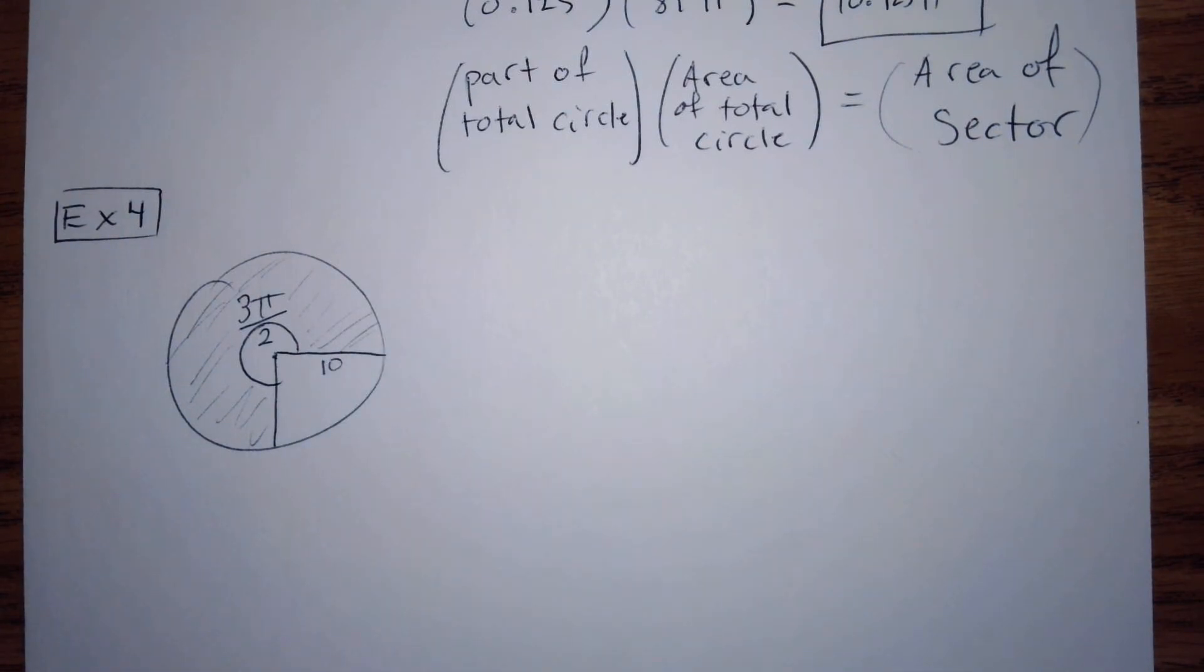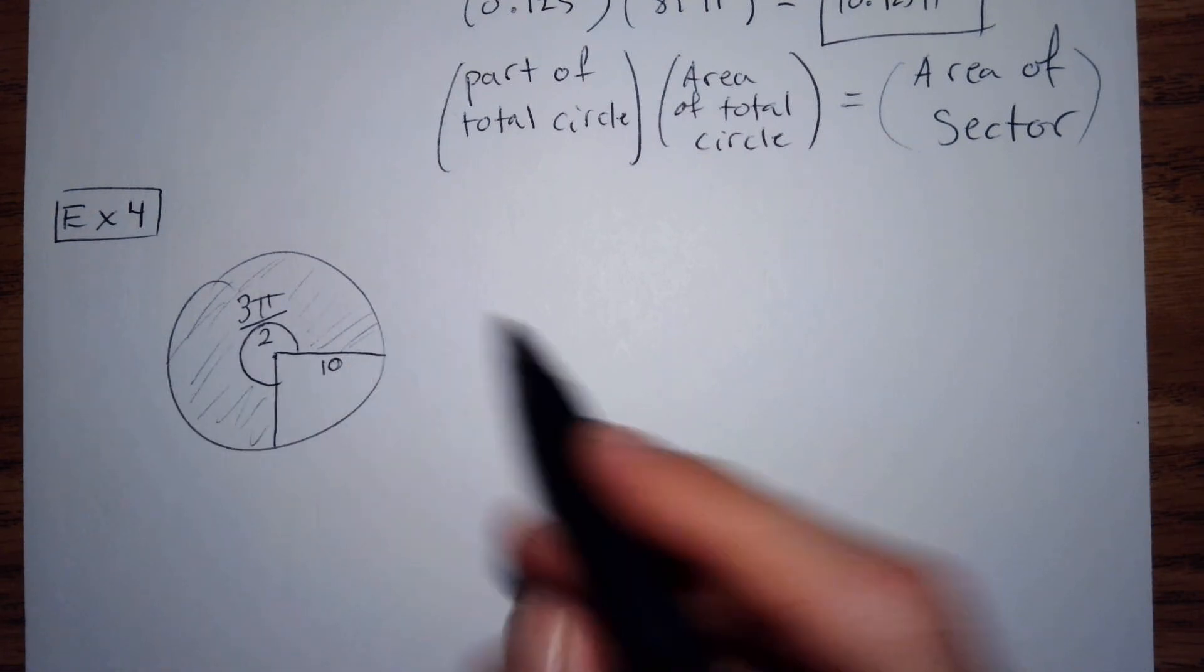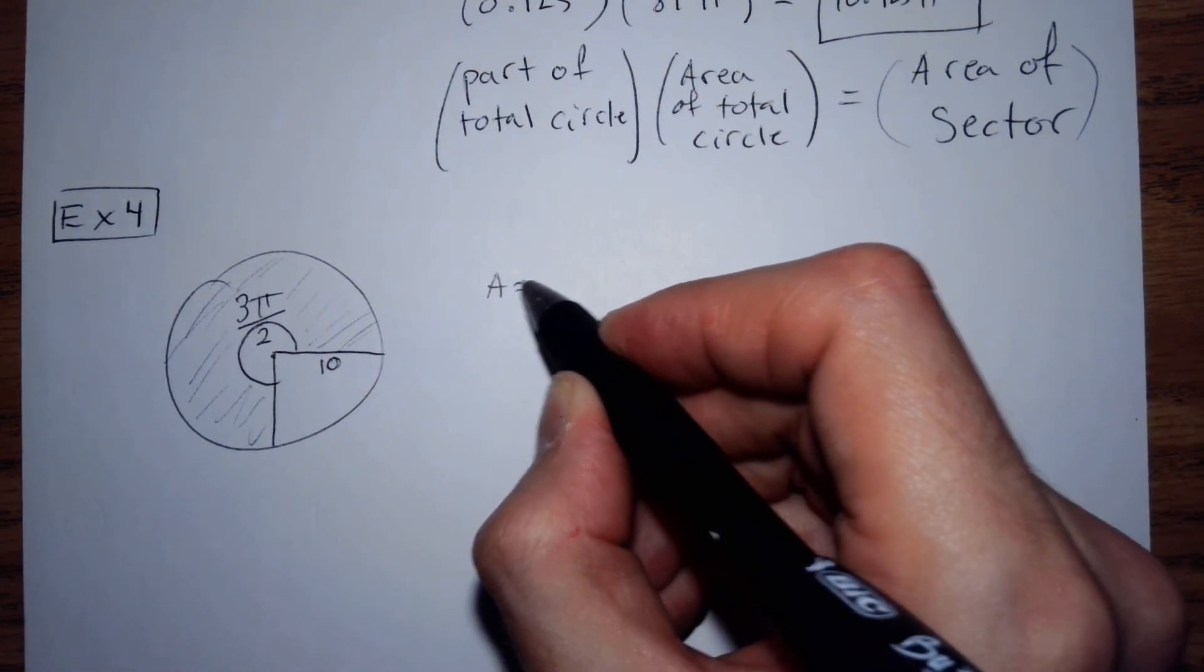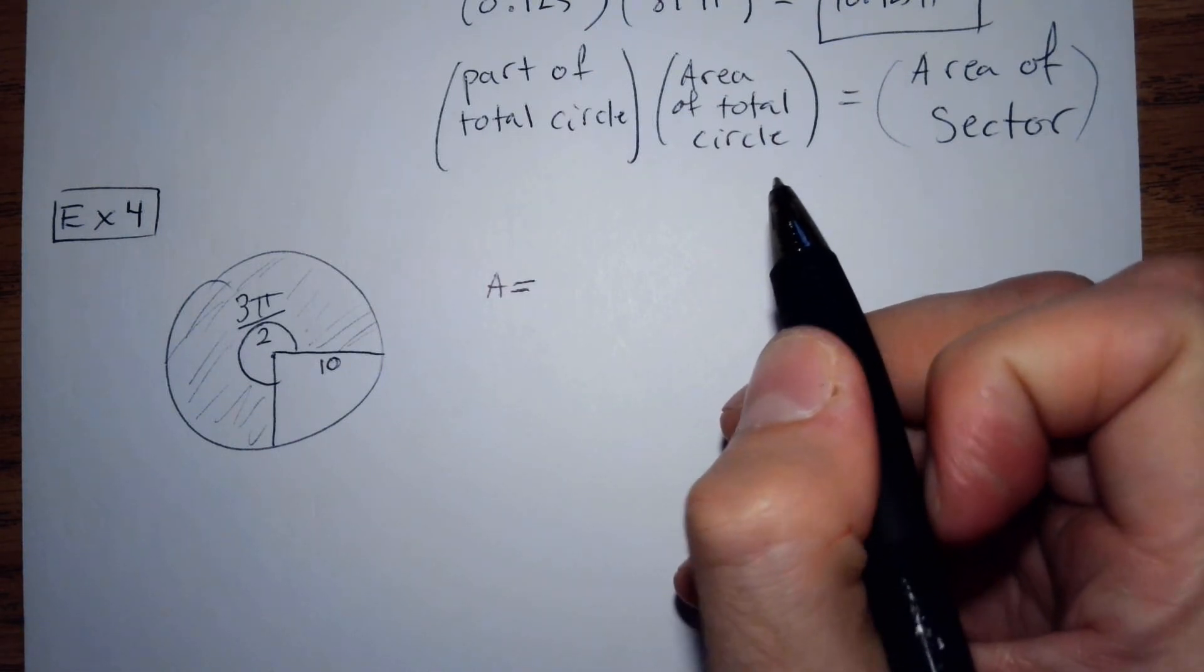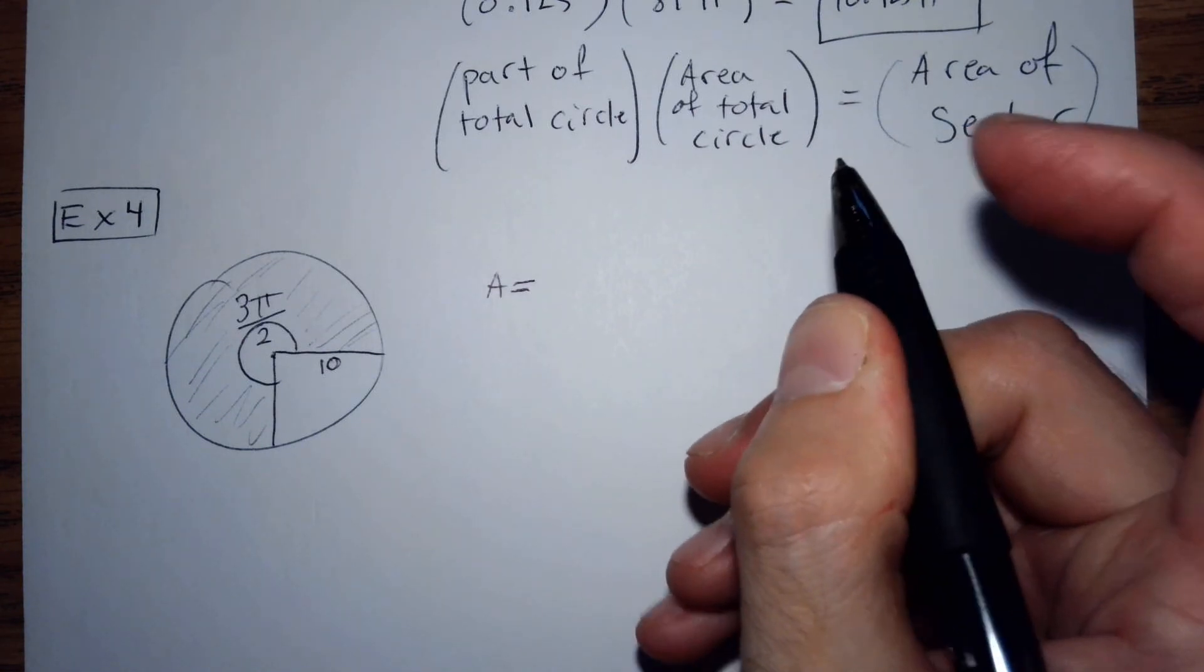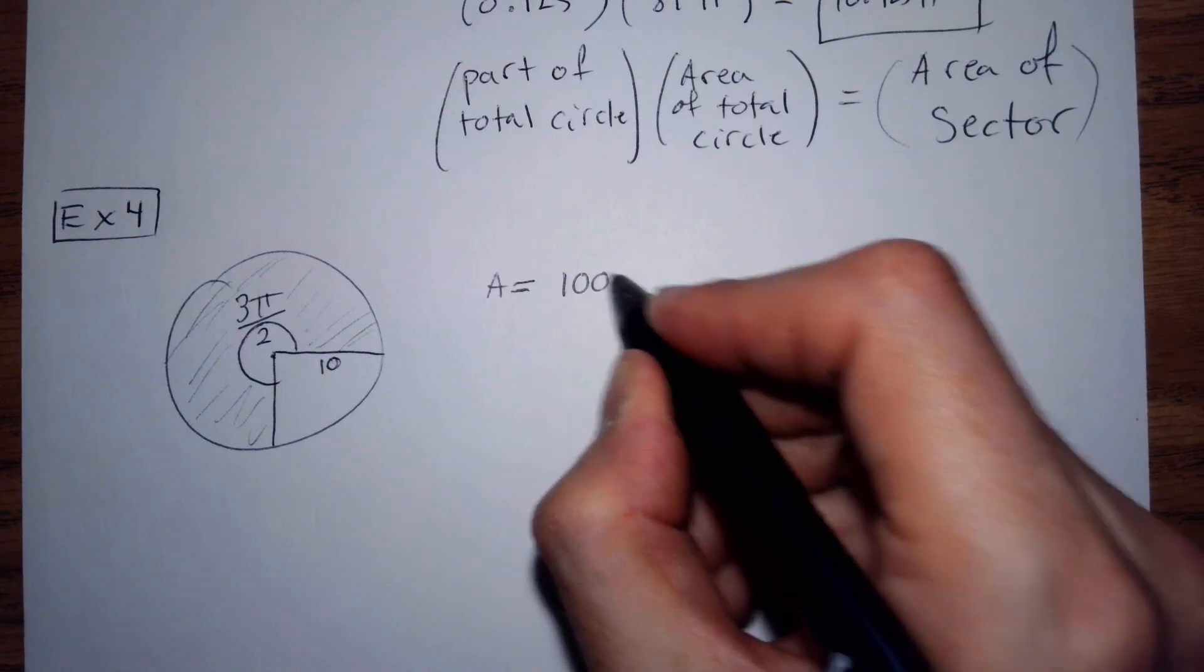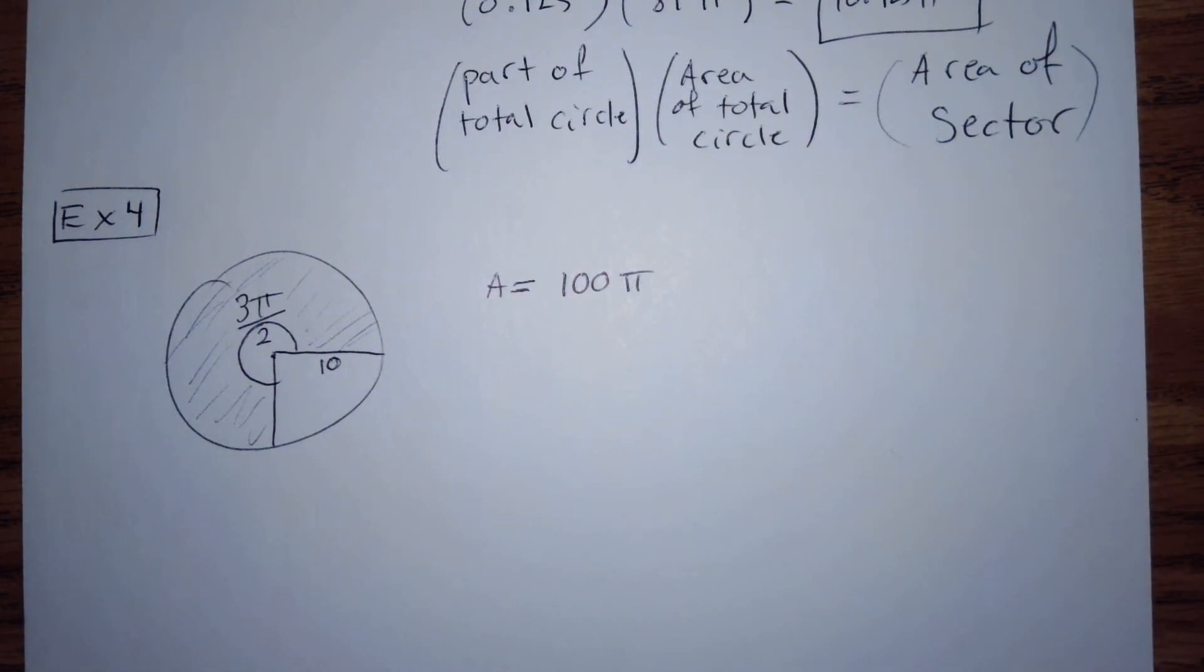In some of your homework problems, they will already give you the total area, so you won't have to calculate it, but we're going to calculate it. What is the total area of this circle? In terms of pi, do you know what I mean by that? 100 pi, that's the way that makes it cleaner. We're just going to leave it in terms of pi.